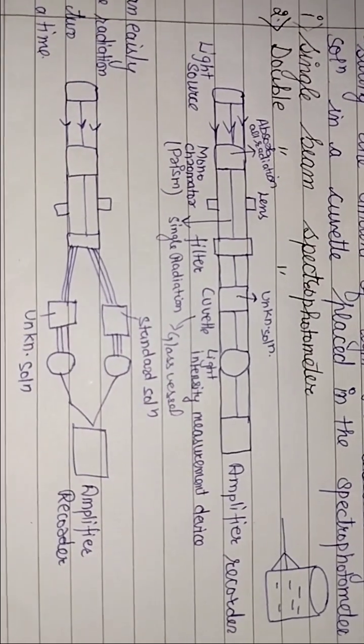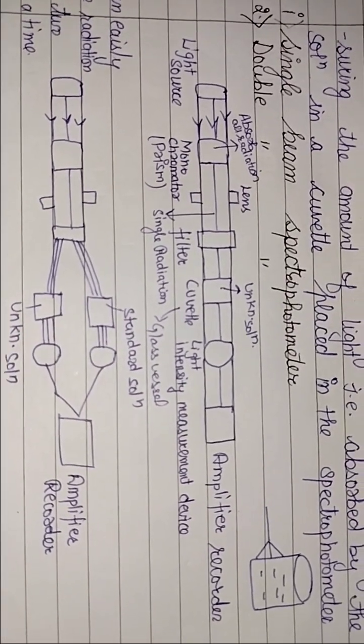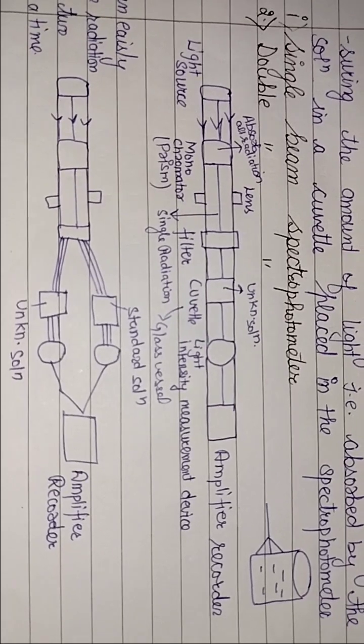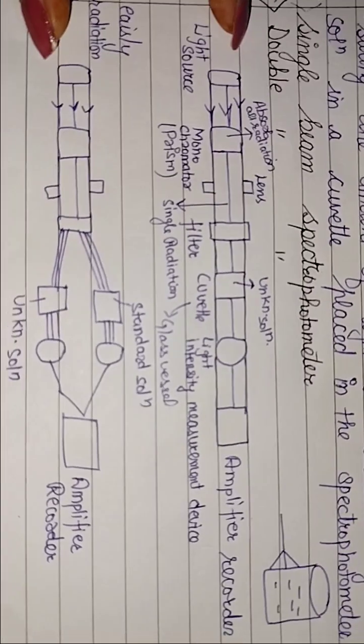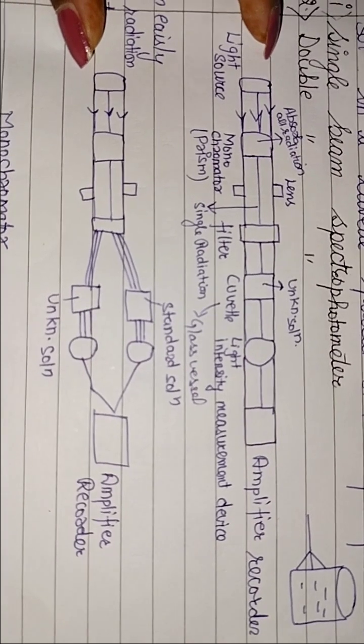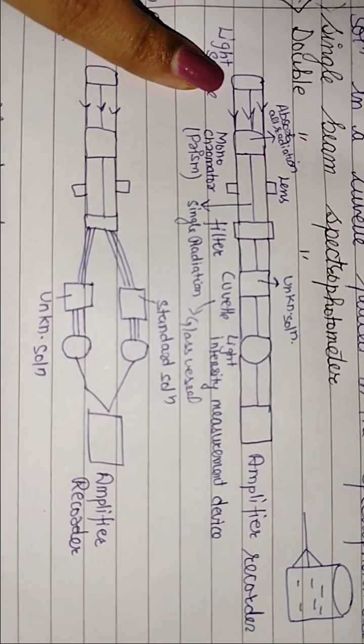Now it is of two types: single beam spectrophotometer and double beam. So these are two diagrams. Basically you will see the same as you can see. But in single beam, it will be the best light source.